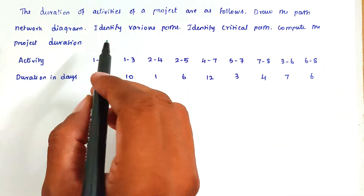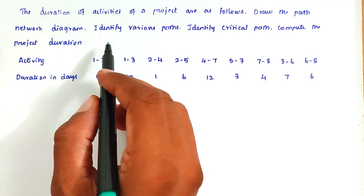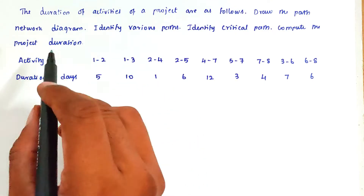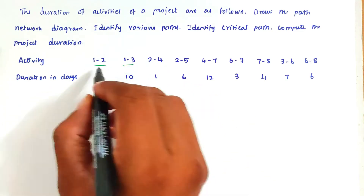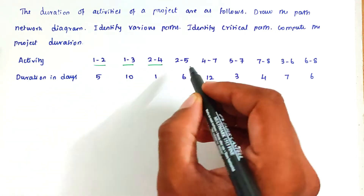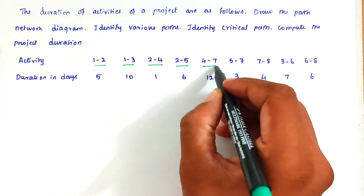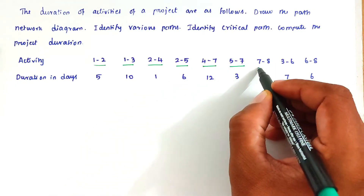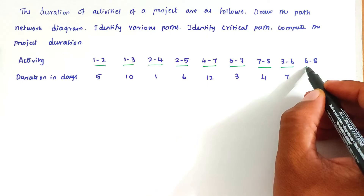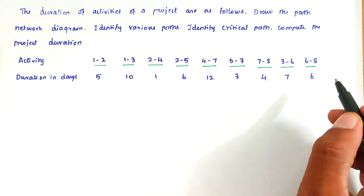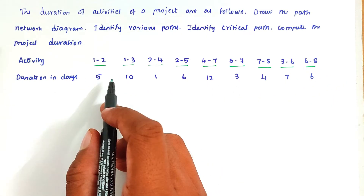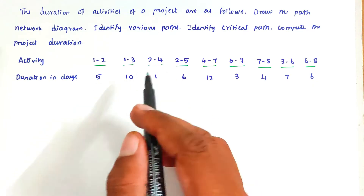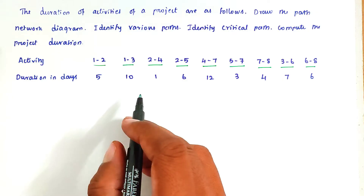So we have to find out the project duration, the critical path, and the network diagram. The activities given are: 1-2 (duration 2), 1-2-3 (duration 1), 2-4 (duration 2), 2-5 (duration 2), 4-7 (duration 2), 5-7 (duration 2), 7-8 (duration 3), 3-6 (duration 2), and 6-8. The corresponding durations are also given.